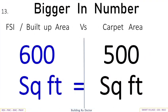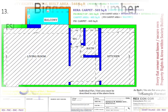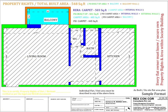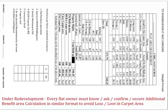FSI Built-Up Area is superior. Every flat owner must know, ask, confirm, and secure additional benefit area calculation in a similar format to avoid loss and exploitation in carpet area.